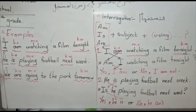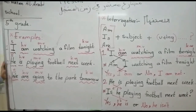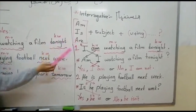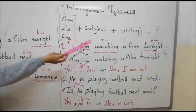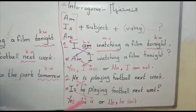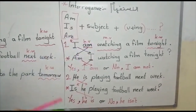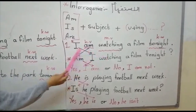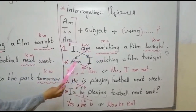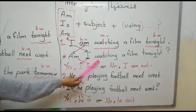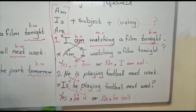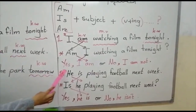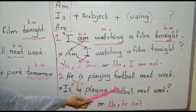Now we will talk about how to make questions using Present Continuous for Future. First, put am, is, or are as the helping verb. Then the subject. Then the verb plus -ing. Then the complement. Add a question mark. For example, from 'I am watching a film tonight,' the question becomes: 'Am I watching a film tonight?' You should answer: Yes, I am. Or: No, I am not.